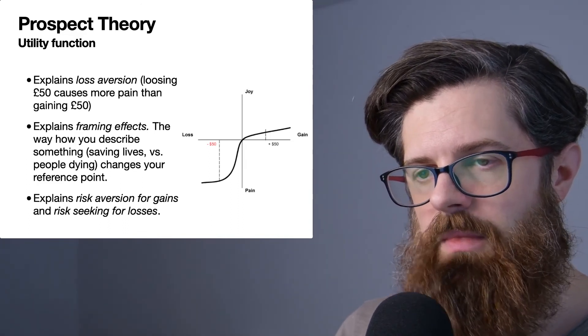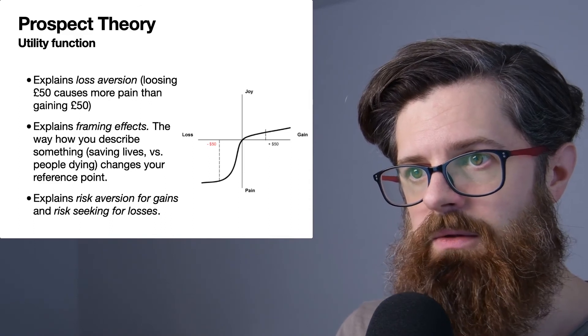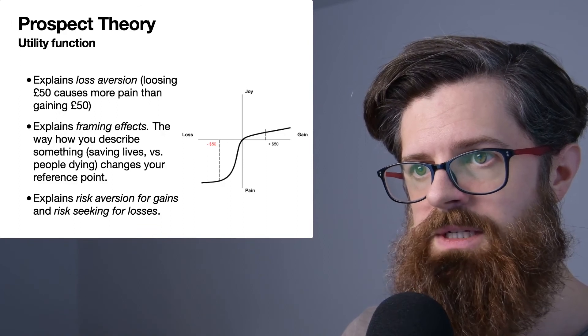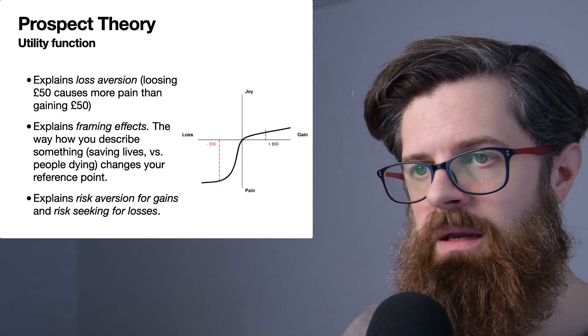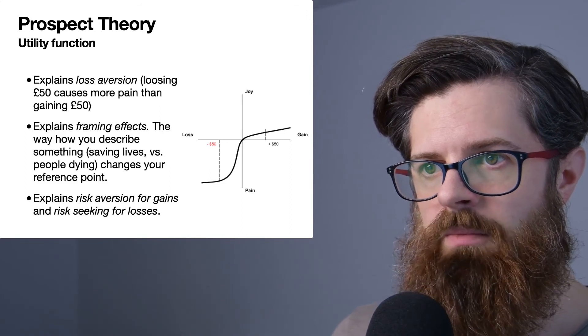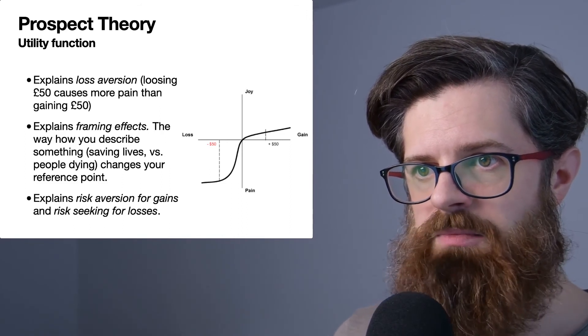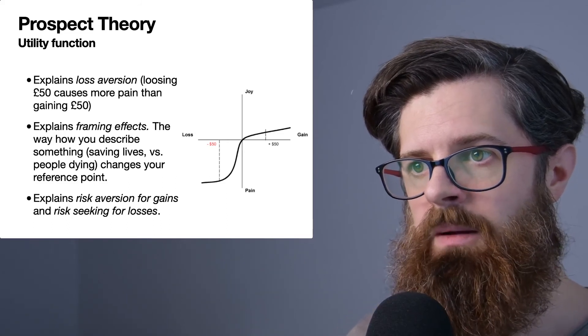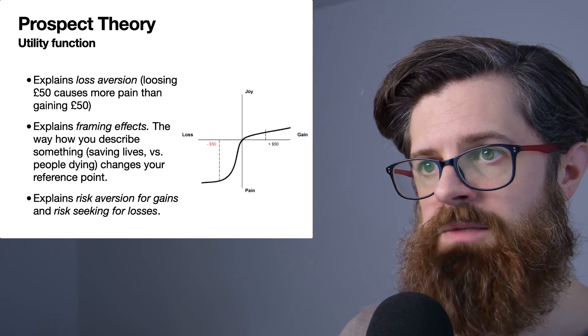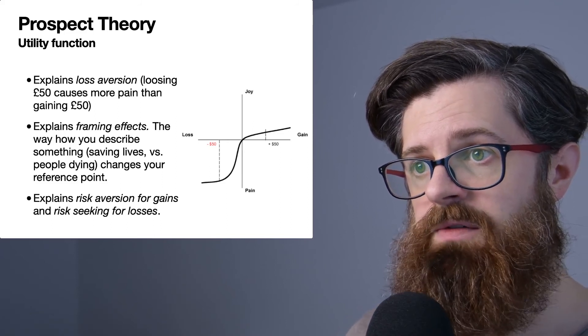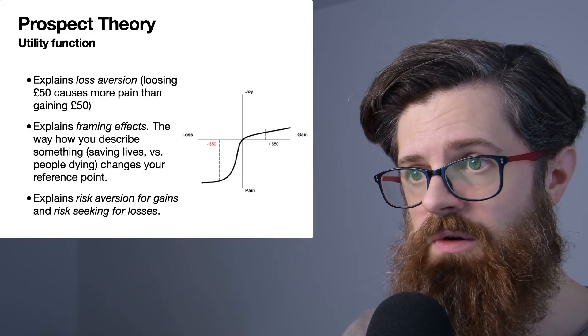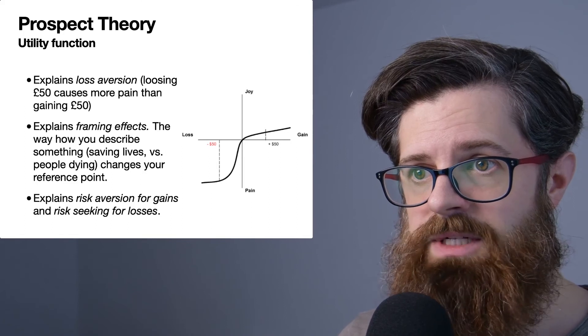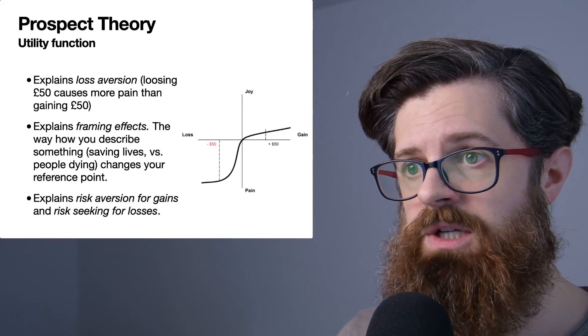Now, these two changes that we've talked about—making the slope steeper for losses and making the subjective utility relative to a reference point, so now you're talking about whether you're gaining or losing—these two changes explain both loss aversion and also framing effects.